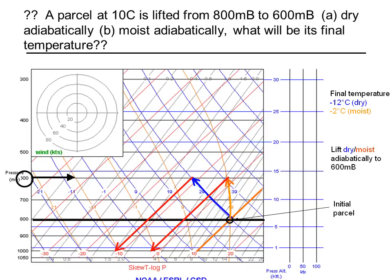The adiabats are shown on the skew-T plot. The orange curved ones are the moist adiabats; the nearly straight blue ones going off to the left are the dry adiabats. We can use this skew-T chart like a little computer to tell us what happens to a parcel if we lift it. If we start with a parcel at 800 millibars and 20°C and lift it dry to 600 millibars, it will follow a dry adiabat and cool down from about 10°C to about minus 12°C. But if that same parcel was totally saturated, it follows the orange moist adiabat and only cools to about minus 2°C — a considerable difference.